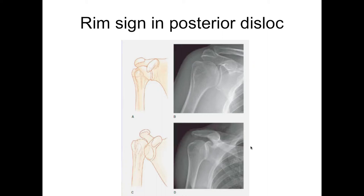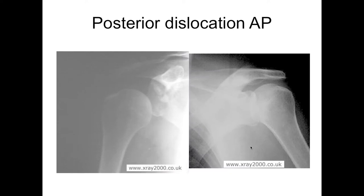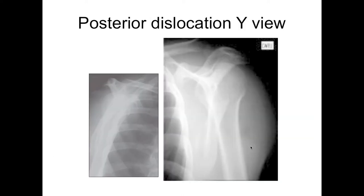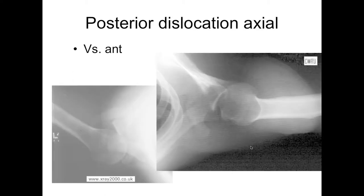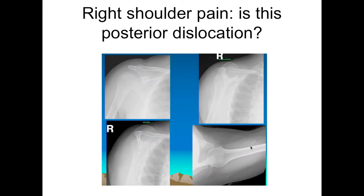You can also get the rim sign, where there's overlap — the humeral head's behind the glenoid, so there's going to be overlap. A bunch of subtle findings. On the AP view there's some overlap. On the Y view, it looks like the humeral head is going towards the acromion rather than the coracoid — once again, it looks posterior. On the Y view you can see it's not where it's supposed to be and not where your typical anterior dislocation is. Getting an axillary view can clear things up — on the bottom right you can see it's clearly within the glenoid fossa, clearing up any question about dislocation.